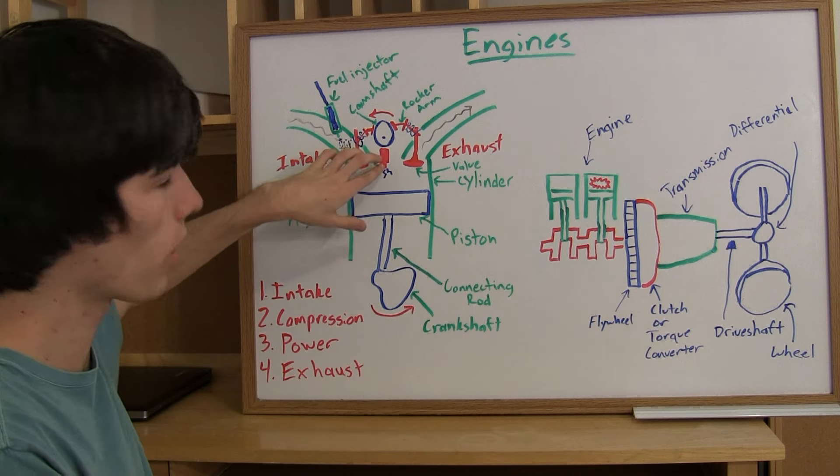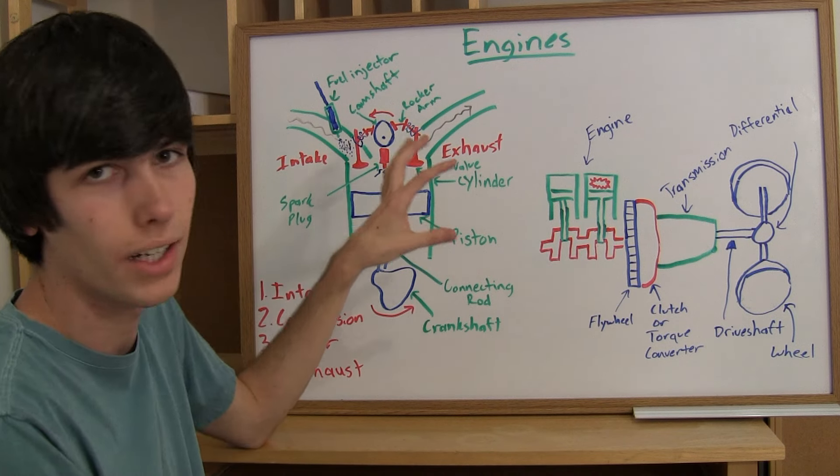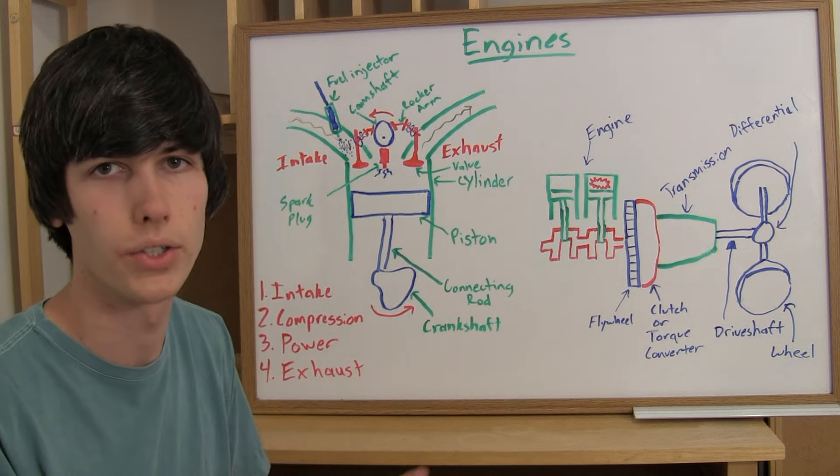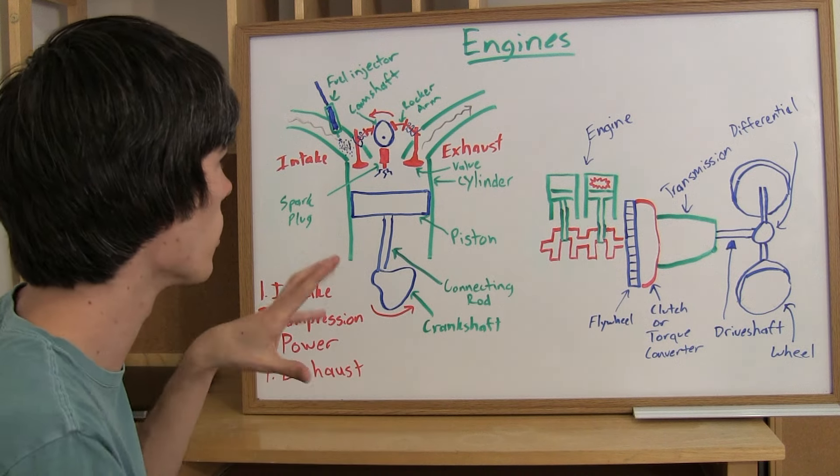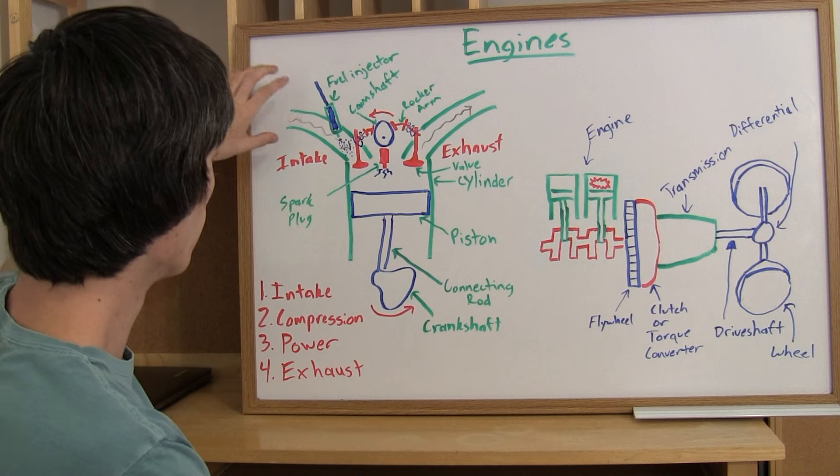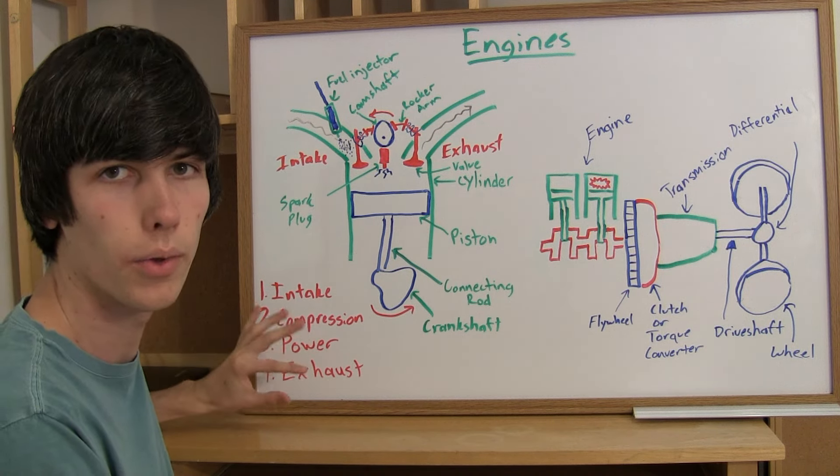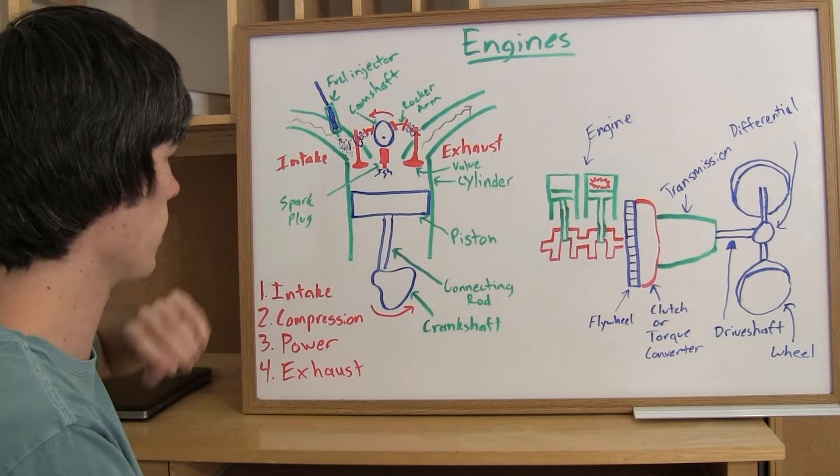And then we've got a spark plug which ignites the air fuel mixture which you put in. So for this video we're going to be looking at a four stroke gasoline engine. It's pretty much the most common here in America so that's why I chose it. So how does all this work? Well you've got four strokes. So I'm going to go through each of these and explain what's happening here.